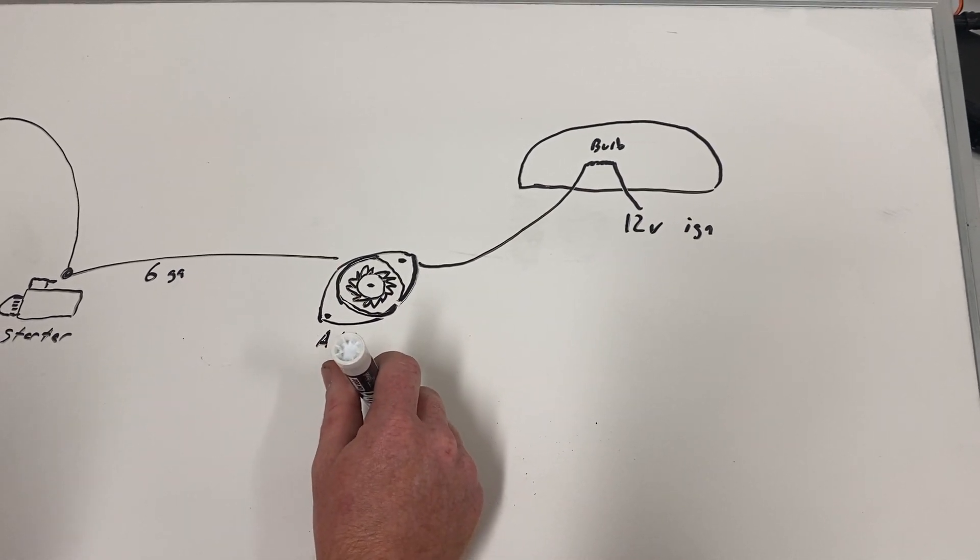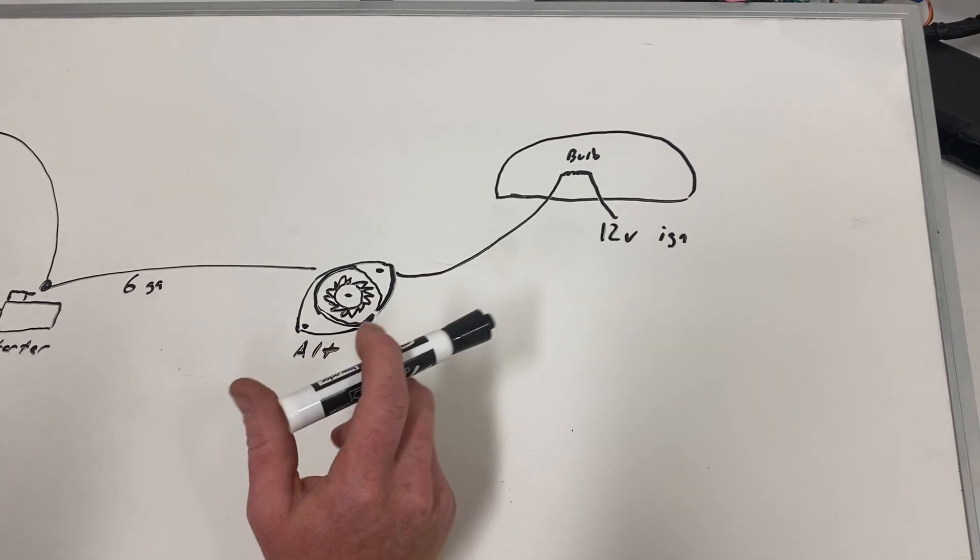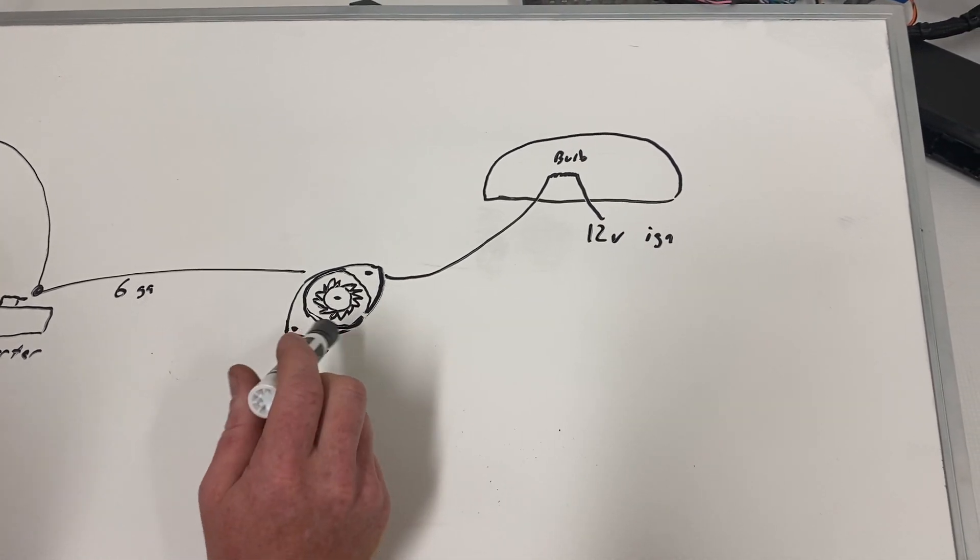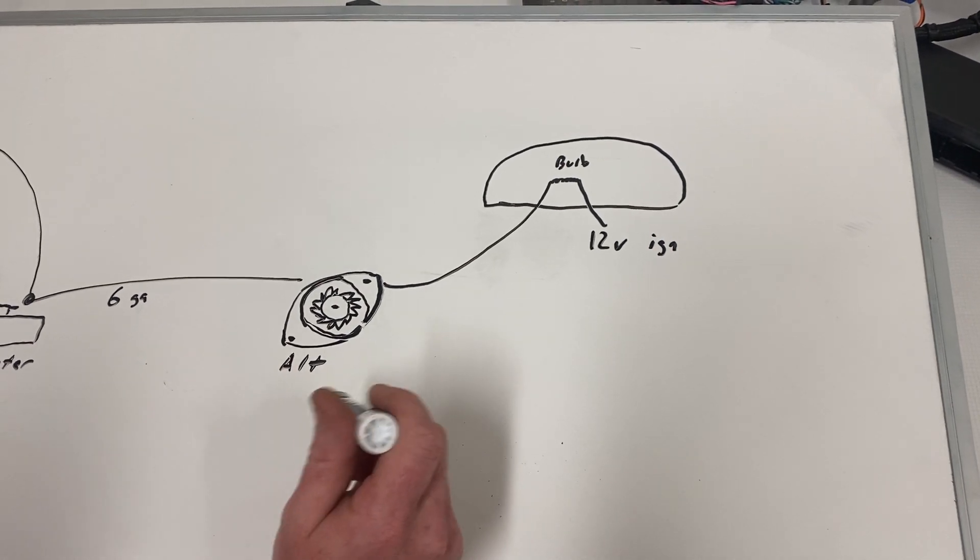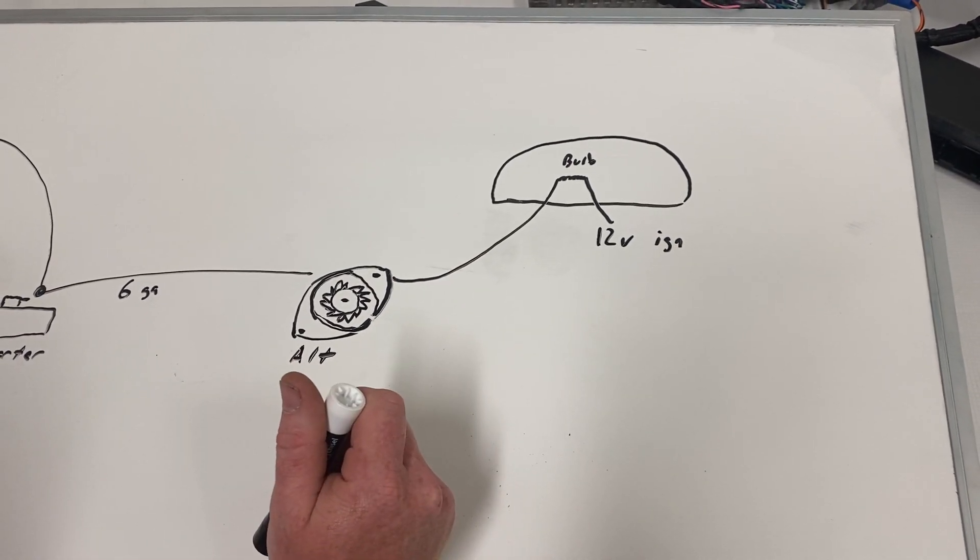JZ harnesses don't really require you to have a charge light. The alternator will charge without it. But we're going to focus on Nissan today. So Nissan requires you to have the charge lamp or resistor in place.